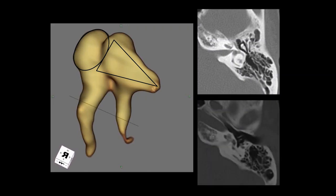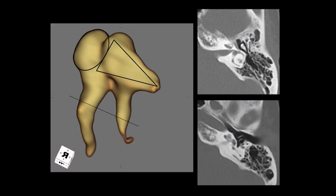By applying this volume rendered surface shaded image to conventional 2D CT images, we can now clearly see that the ice cream cone appearance is represented by the head of the malleus contributing to the ice cream and the body and short process of incus contributing to the cone. Likewise, the two lines — the anterior formed by the manubrium of the malleus and the posterior formed by the long process of the incus.